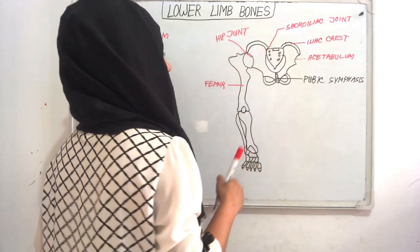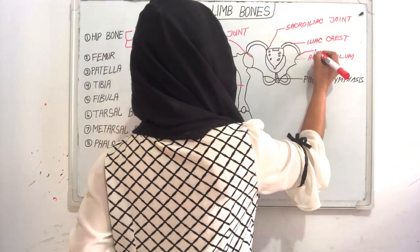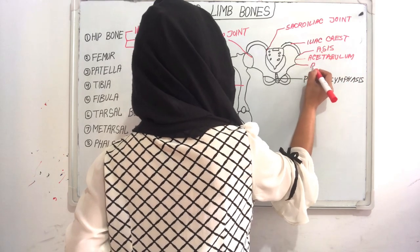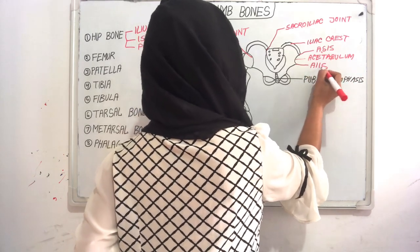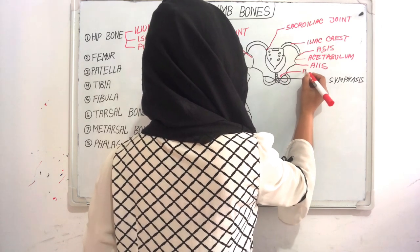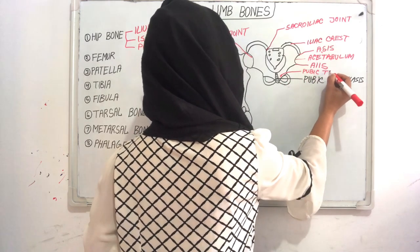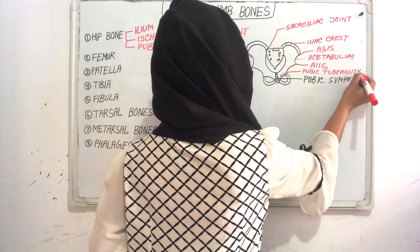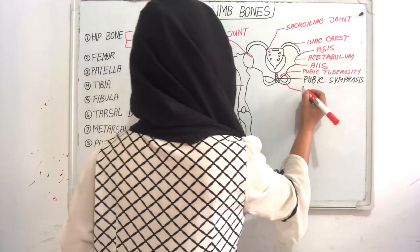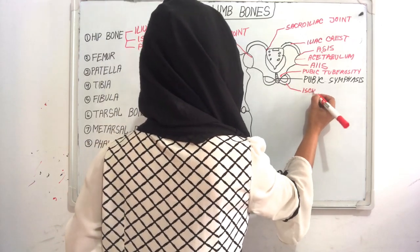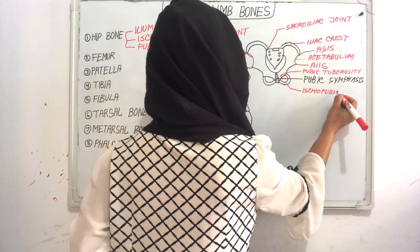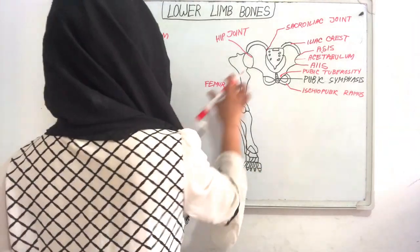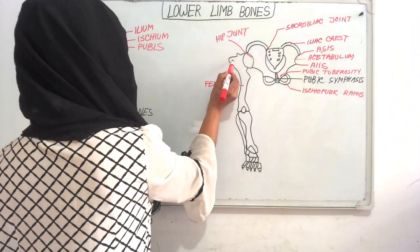This is the anterior superior iliac spine, and this is the anterior inferior iliac spine. This is the pubic tubercle. This is the ischium and pubic ramus. This is our femur, and this is the greater trochanter.